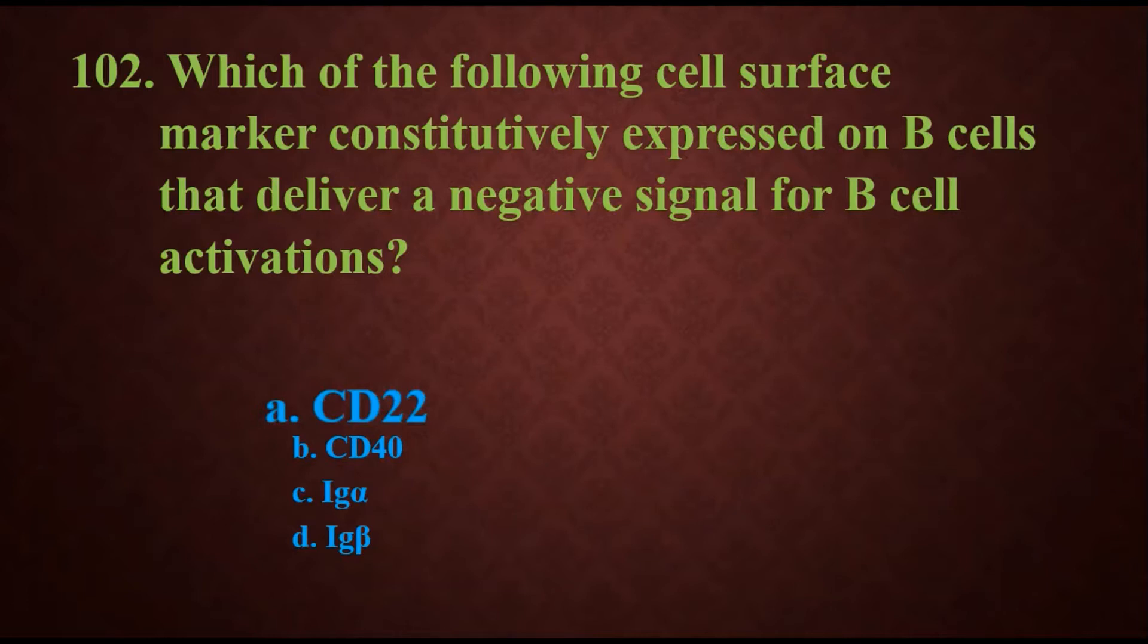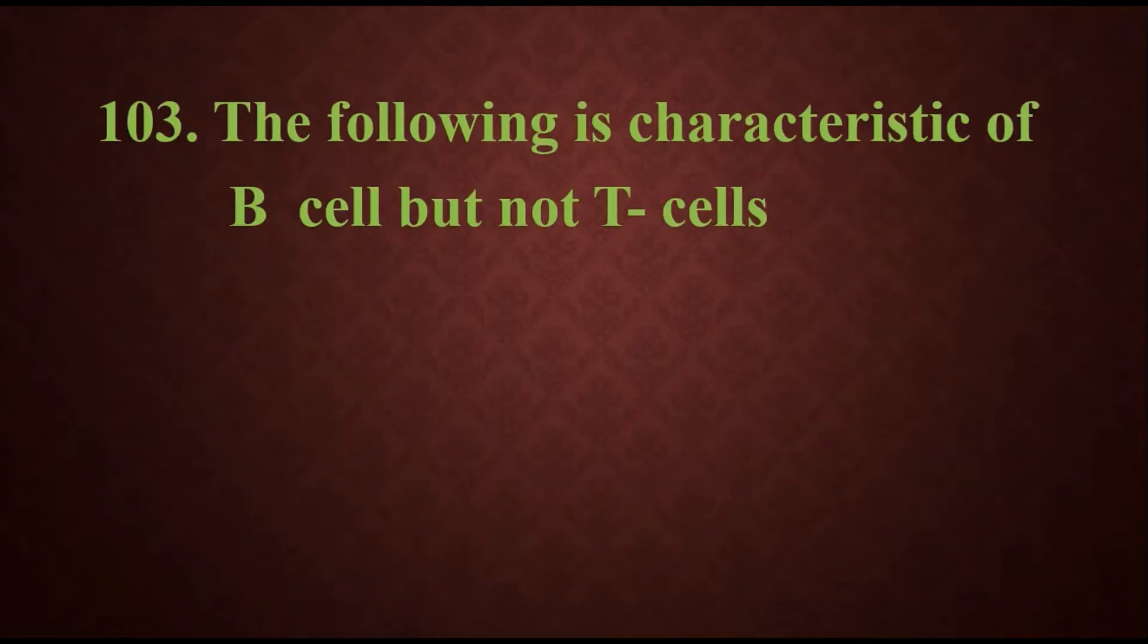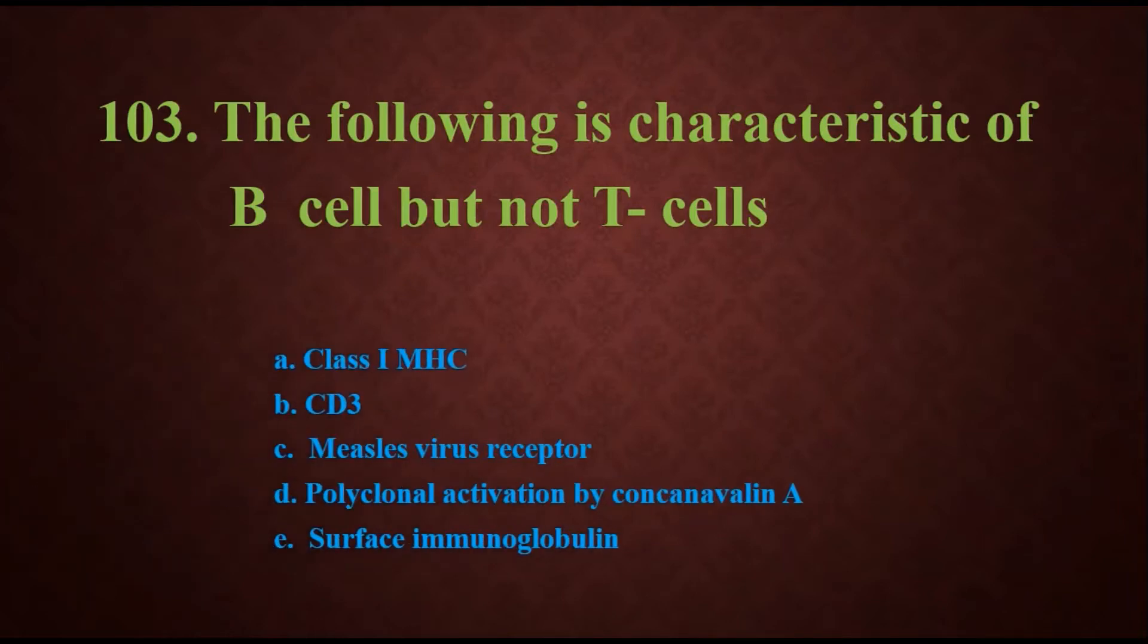Question 103: The following is the characteristic of B cells but not T cells. Options are class 1 MHC, CD3, measles virus receptors, polyclonal activation by concanavalin A, or surface immunoglobulin. The answer is surface immunoglobulin.